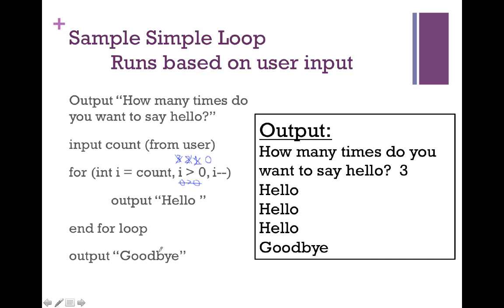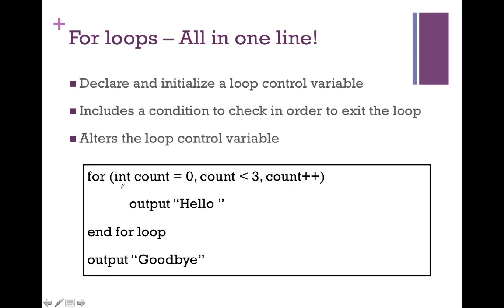Inside your for loops, you can count up or count down — you can increase or decrease the loop control variable. For loops are great because you can do it all in one line: declare and initialize a loop control variable, include the condition to check that must become false to leave the loop, and provide the alteration of the loop control variable in the same statement. Although for loops commonly control a fixed number of executions, the starting value, final value, and step amount can come from user input or a calculation, which gives us flexibility in using for loops.